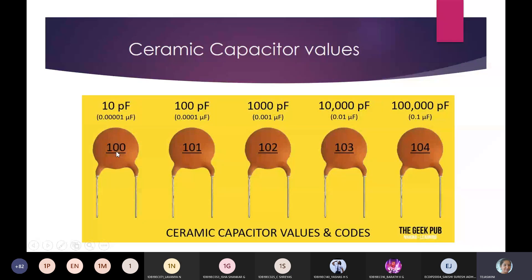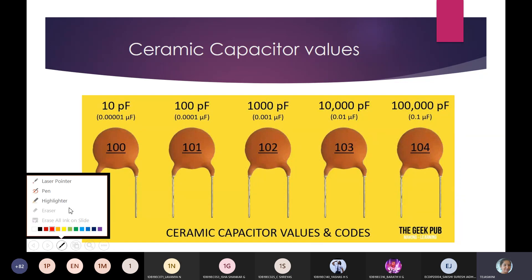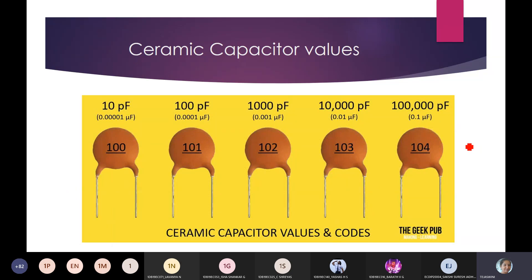You can observe the numbers 100, 101, 102, 103, 104 on the capacitors. You need to identify whether it is 0.1 or 0.01 microfarad. The actual logic is: the first two digits indicate the number, and the third digit is an exponential part — for example, 10 × 10^4. The unit is picofarad.